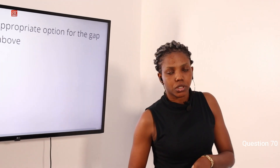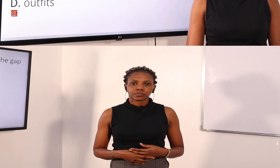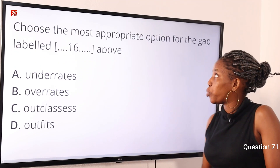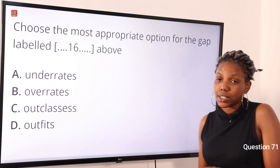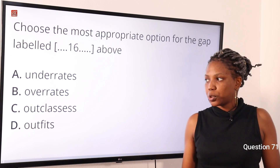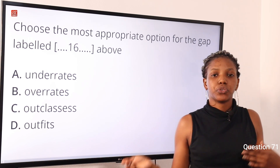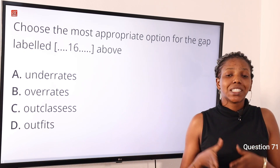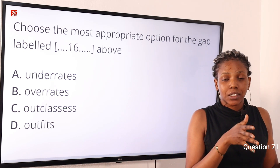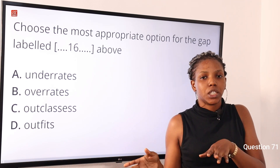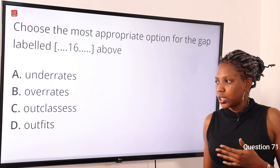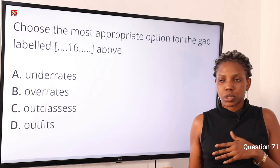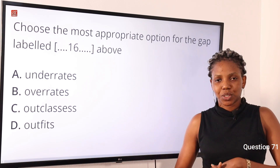Do you have better steps, explanations, or solutions to any of those questions? If yes, feel free to use the comment section below. Question 71: Choose the most appropriate option for the gap — option A: underrate, option B: overrate, option C: outclasses, option D: outfit. The answer is outclasses. The writer is describing one opponent surpassing another — being superior. Outclasses means to be superior to someone else. So option C is the correct answer.